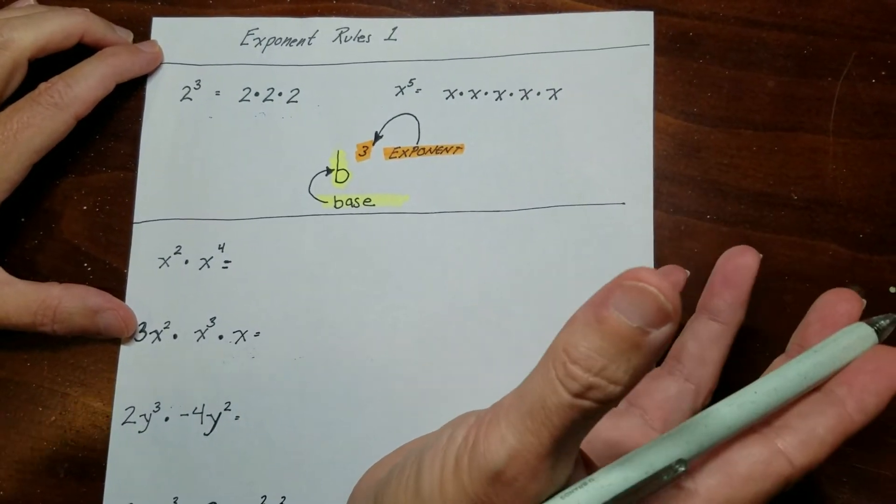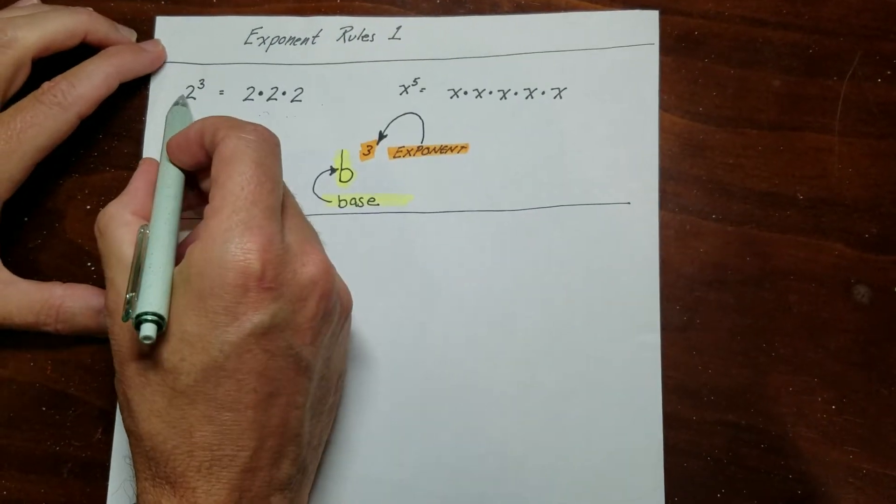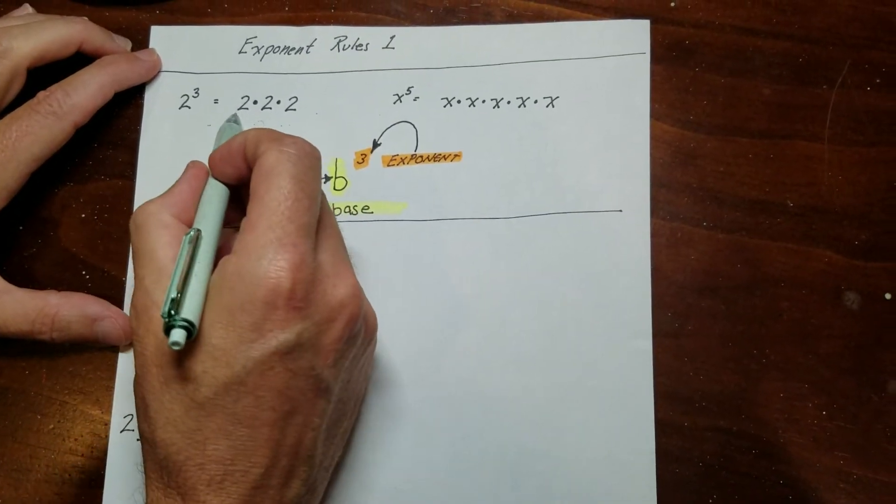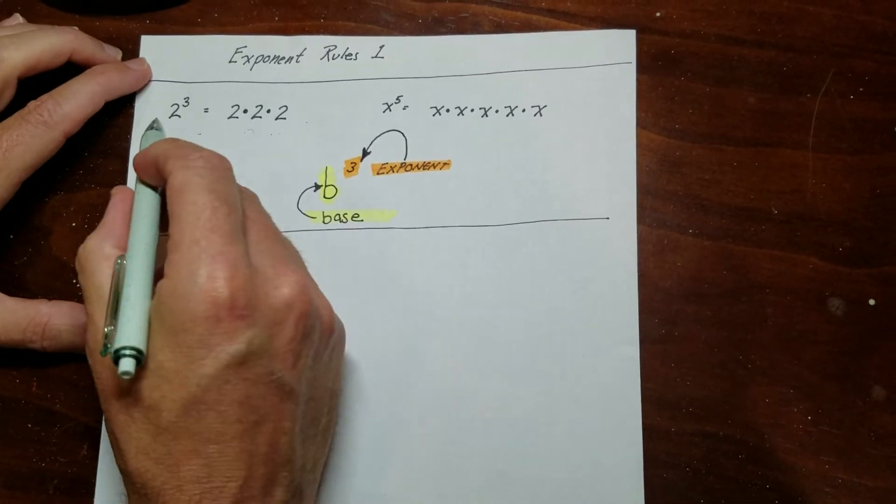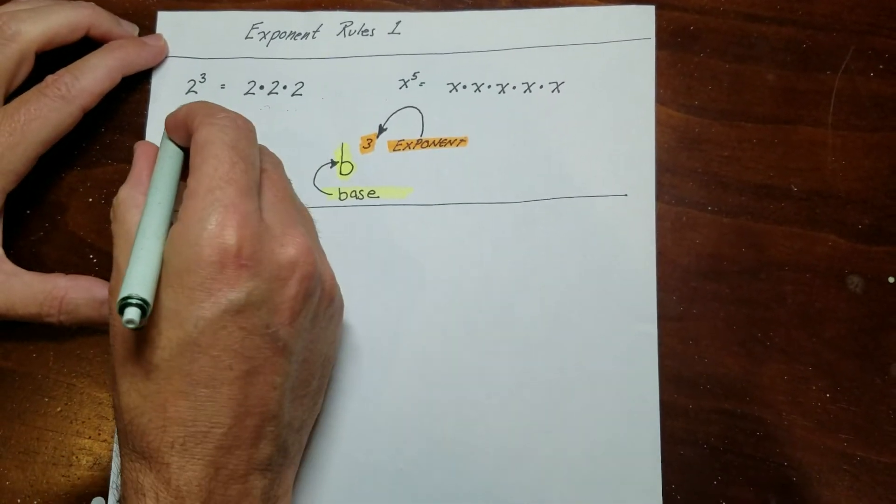So a couple of things at the beginning not to get confused with. This does not mean 2 times 3, it means this. It means 2 times 2 times 2. But a lot of times people accidentally make a mistake and think that this is 6.